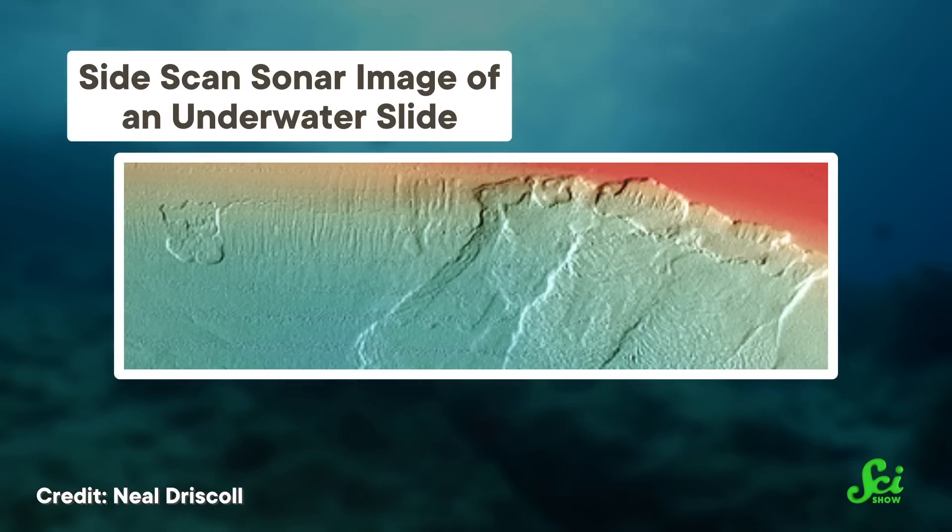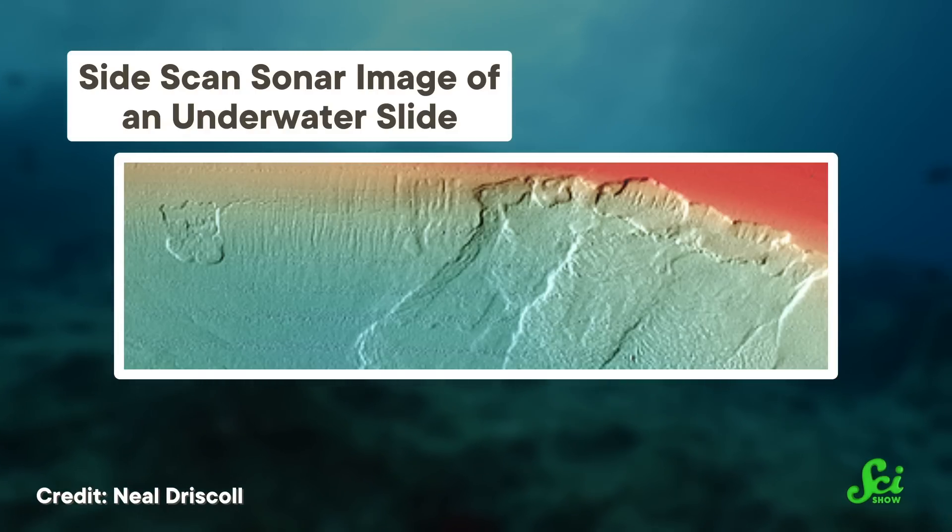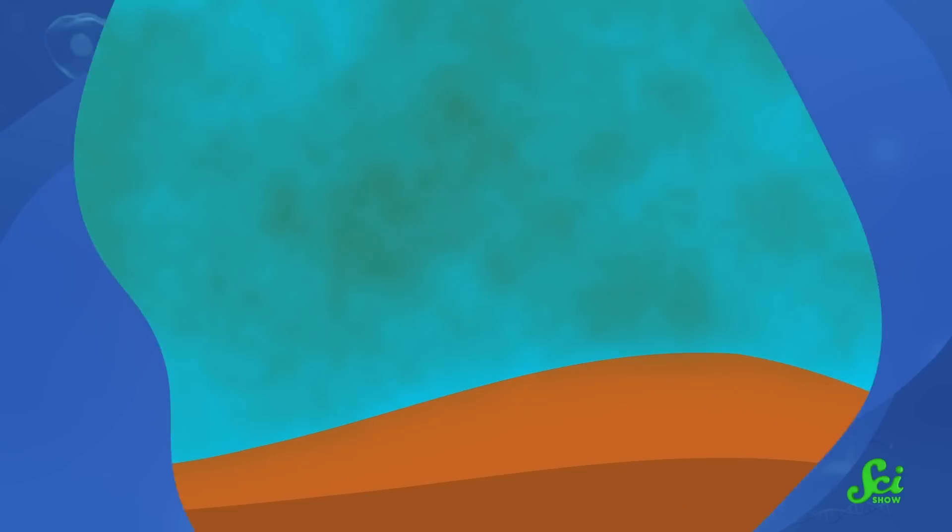And sure enough, in the undisturbed core sample, right where the land had split apart in the slide, they found the unstable layer they'd been looking for. It was just a few meters thick, which is not that thick at all on geological scales, and it was sandwiched between two stable layers of sediment. Of all things, the layer was made of microscopic dead algae. Or, as scientists actually call it, ooze.